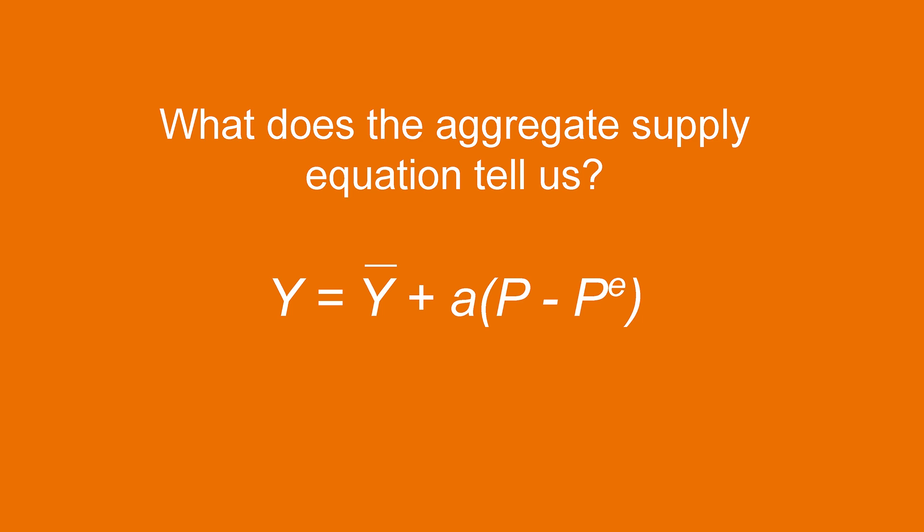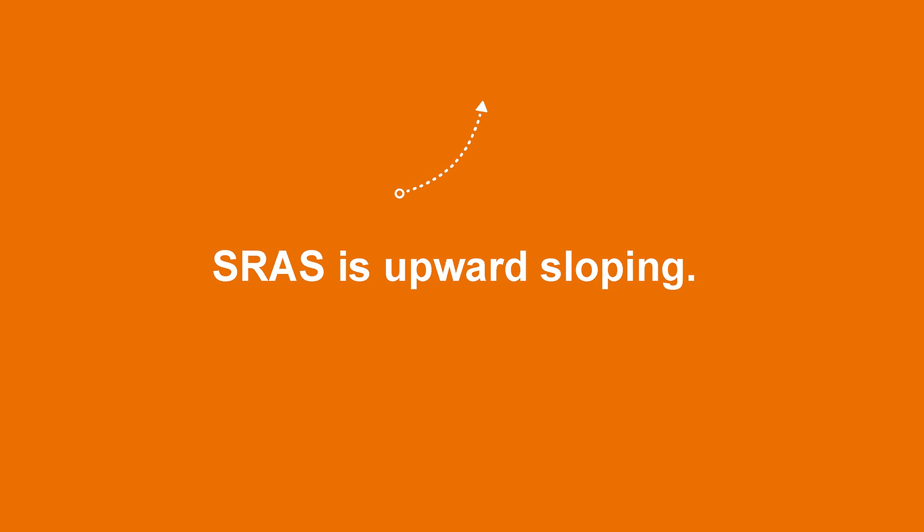So, what's the implication of short run aggregate supply equation? First, short run aggregate supply slopes upward. To see this mathematically, let's rewrite the equation with P on the left-hand side now, which gives us P equals to negative 1 over A multiplied by Y bar plus PE plus 1 over A multiplied by Y.